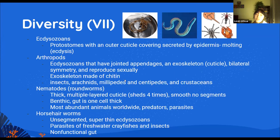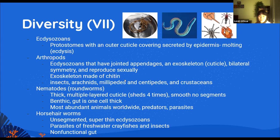Chitin is also found in arthropods and their exoskeletons. Nematodes are roundworms — they are the most abundant animals worldwide. They can be predators, parasites, basically anything. Just remember that they're round. Horsehair worms are like thin worms.